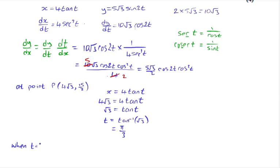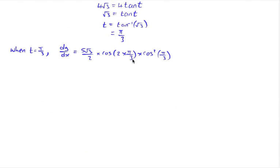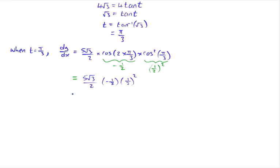When t equals pi over 3, dy/dx equals 5 root 3 over 2 times cos(2 times pi over 3) times cos squared(pi over 3). 2 times pi over 3 is 2 pi over 3, and cos of 2 pi over 3 is minus a half. Cos of pi over 3 is plus a half, so cos squared pi over 3 is a half squared. So we have 5 root 3 over 2 times minus a half times a quarter. A quarter times minus a half is minus an eighth, giving us minus 5 root 3 over 16.